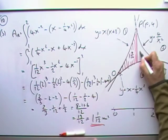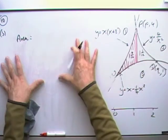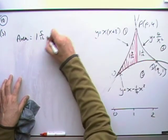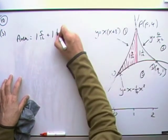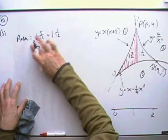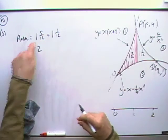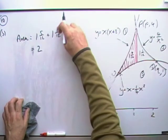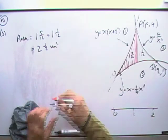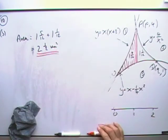That was 1 and 5 twelfths, that was 1 and 1 twelfths. So finally the area is going to be, the left hand side was 1 and 5 twelfths, the right hand side was 1 and 1 twelfths, 1 and 1 makes 2, 5 and 1 makes 6 twelfths, which is a half. So you've got 2 and a half square units.